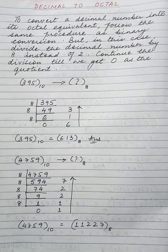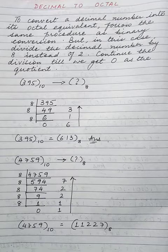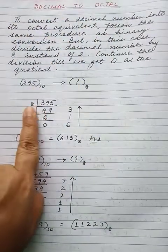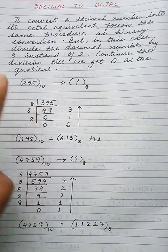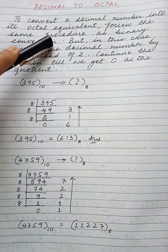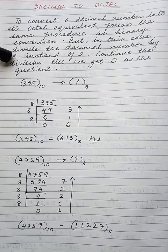Today we will be doing decimal to octal and octal to decimal. Whenever a number is to be converted from decimal to some other base, it is to be divided by that base. Like in the previous class we had learnt decimal to binary — we used to divide the number by 2. In decimal to octal we will be dividing the number by 8. To convert a decimal number into its octal equivalent, follow the same procedure as binary conversion but divide by 8 instead of 2. Continue the division till we get 0 as the quotient.